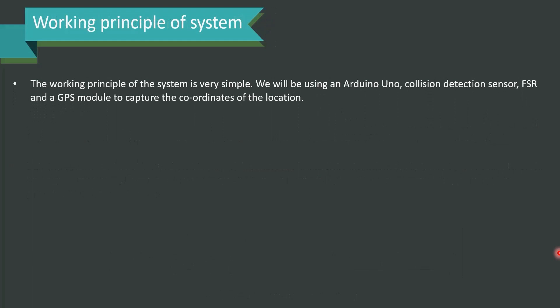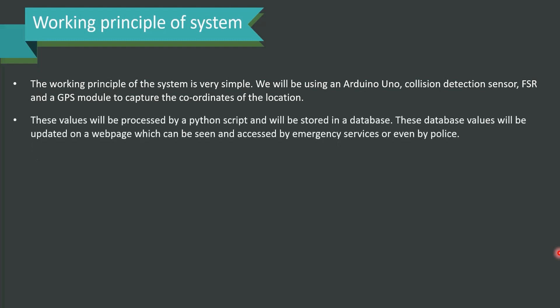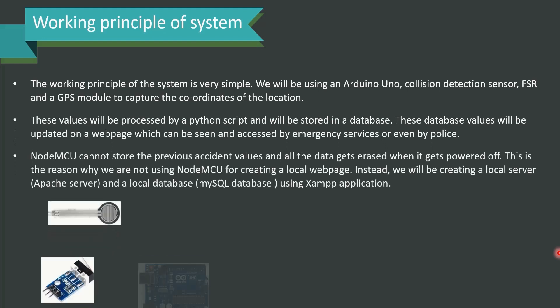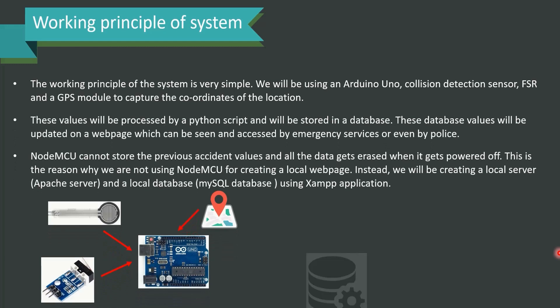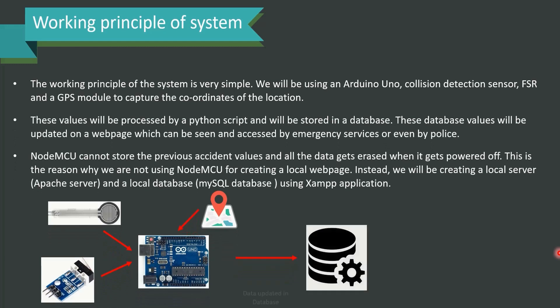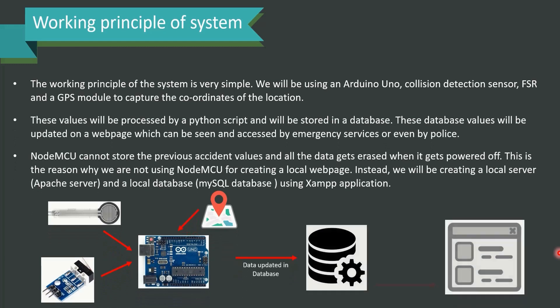The working principle of the system is very simple. We will be using an Arduino Uno, a collision detection sensor, an FSR sensor, and a GPS module to capture the coordinates of the location. These values will be processed by a Python script and stored in a database. The database values will be updated on a webpage which can be accessed by emergency services, police, or appropriate resources.